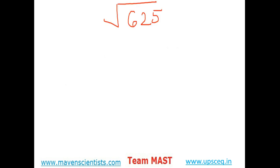Suppose the number is 625. I'm taking it from the very basic, so I'm taking this three-digit number at very basic steps. The very first step is to start dividing the number into pairs starting from the rightmost corner. So 25 makes one pair and 6 makes another pair.